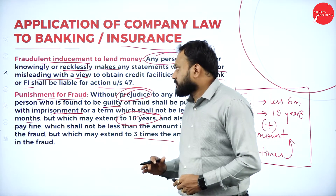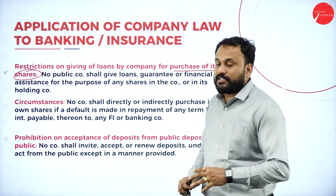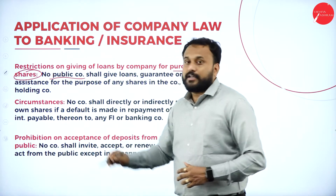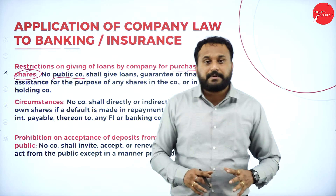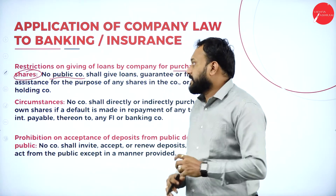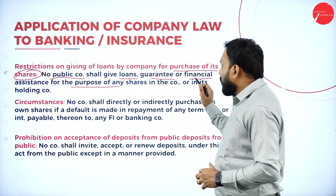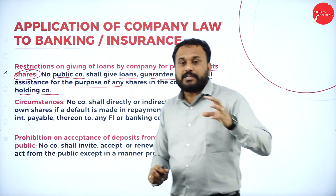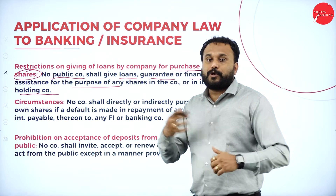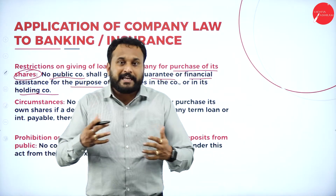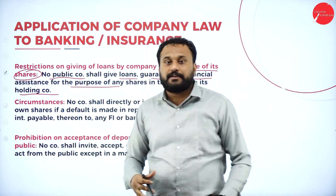Next are restrictions on giving loans by a company for purchase of its own shares. There are two types of companies — private and public. In a private company, shares cannot be transferred, but in a public company shares can be easily transferred. No public company shall give loans, guarantees, or financial assistance for the purpose of purchasing any shares in the company or in its holding company. The company will not help others acquire shares from its own or its holding company.